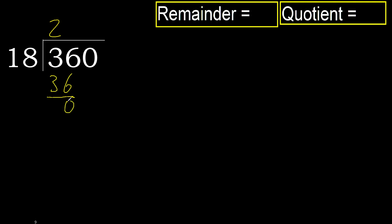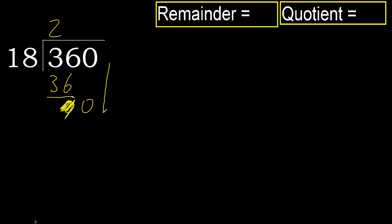Subtract. 36 minus 36 equals 0. Eliminate — bring down the 0 on this side. But 0 is less, therefore next. There is no number, therefore finish with this number. Complete — always complete with 0.